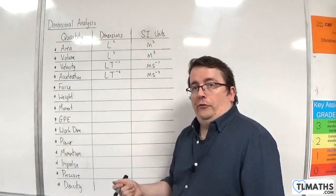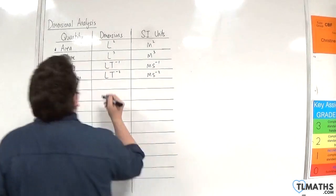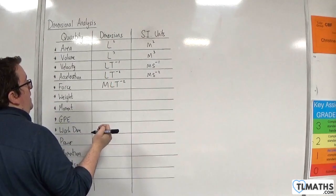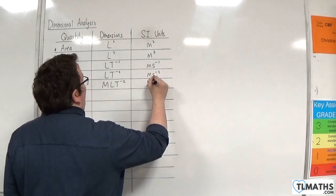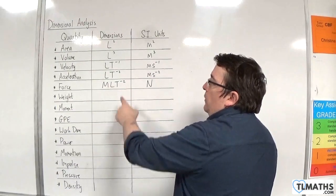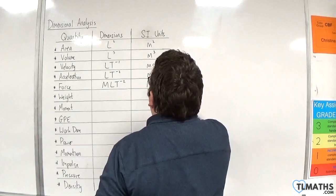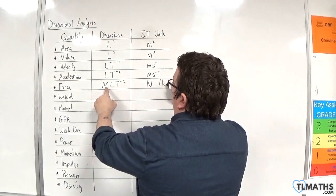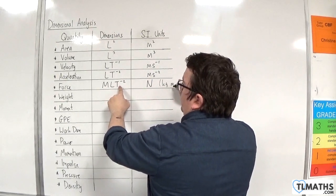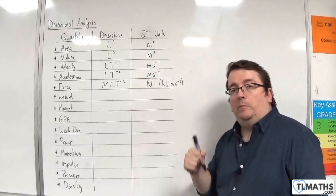A force is mass times acceleration. The SI units for force are measured in newtons. The dimensions really help you recall that one newton is the same as — because it's a mass (kilogram), then length (metre), then T to the minus two (per second per second). So, kilogram metres per second squared.